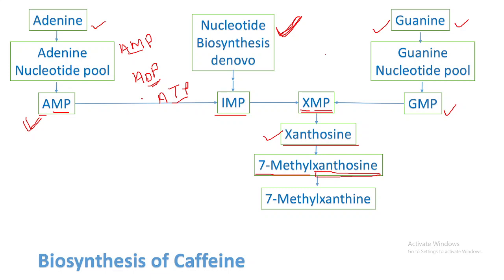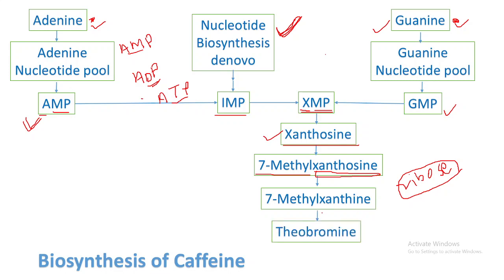If xanthine is attached to ribose sugar, the new molecule is called xanthosine. If guanine is attached to ribose sugar, it is called guanosine. So in 7-methylxanthosine, what happens is that the ribose sugar is cleaved off, leaving 7-methylxanthine. Next, 7-methylxanthine gets converted to theobromine — one methyl group is added — and theobromine gets converted into caffeine when one more methyl group is added.